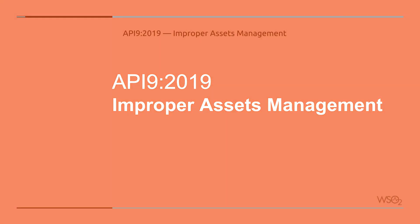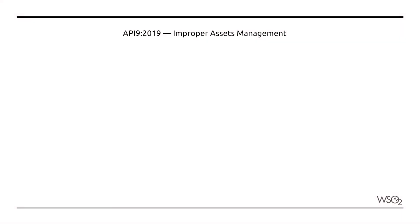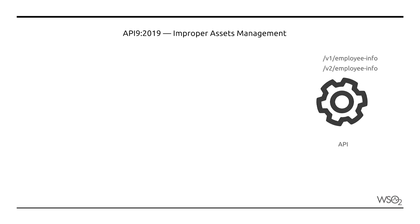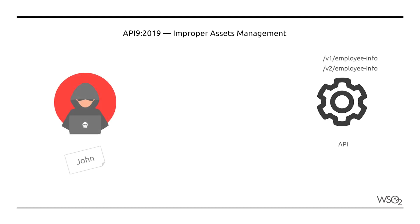Improper Assets Management. It was discovered that version 1 of the Employee Info Search API (v1EmployeeInfo) exposed too much personal information about the subject of the search. This was rectified in version 2 (v2EmployeeInfo), and the latest versions of the applications were upgraded to use the new API version. However, due to existing legacy users that need to be supported, version 1 of the API is still being run.